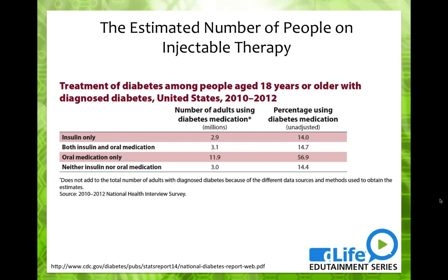Approximately 2.9 million people with diabetes are on insulin therapy — this does not include those on GLP-1 therapy and is not divided between type 1s and type 2s. So you're not alone when it comes to the number of people having a conversation about requiring injections or being on injectable therapy.